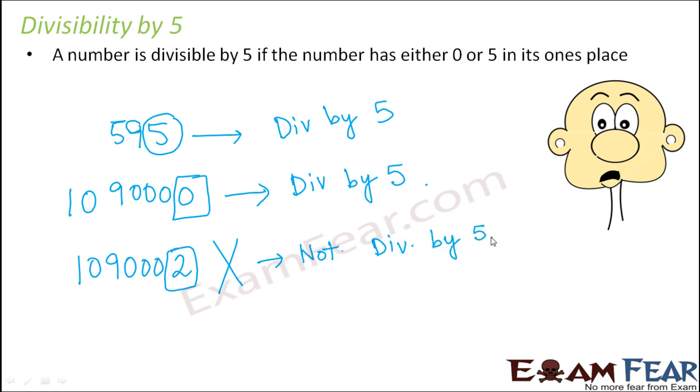So only if the number has 0 or 5 in its ones place, only in that case the number will be divisible by 5.